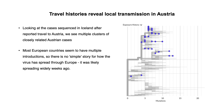When looking at the cases sequenced in Iceland after reported travel to Austria, we see multiple clusters of closely related Austrian cases sequenced over a short time period, most consistent with multiple introductions into Austria. We can't be sure if the linked sequences represent community transmission in Austria or travel partners linking together after exposure to the same strain. The number of connections between different European countries is notable — most European countries seem to have multiple introductions, so there is no simple story for how the virus has spread through Europe.